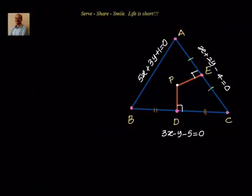Hello friends, welcome back, hearty welcome to you. In this session, let us see how to find out the circumcentre of a triangle given the three sides of a triangle. We have been given equation of AB, equation of BC, equation of AC. We have to find out the point of intersection of perpendicular bisectors which is equal to the circumcentre of the triangle. Now, how to approach this particular problem?